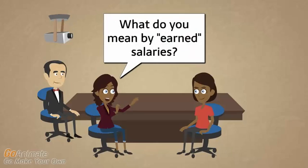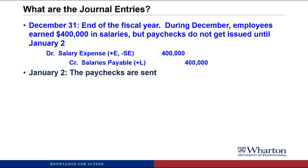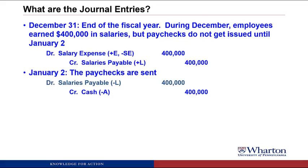You might wonder about the phrase 'earned salaries' — that sounds like a revenue concept. From the employee's perspective, they earned salary revenue by providing a service with an agreement to get paid. What is revenue for the employee is an expense for the employer — hence salary expense. On January 2nd, paychecks are sent. We credit cash for $400,000 and debit salaries payable for $400,000, eliminating the liability since the obligation is now settled.